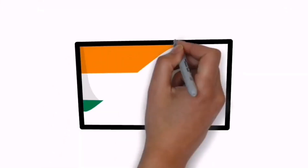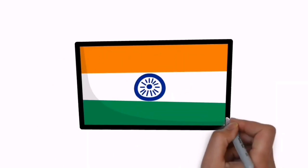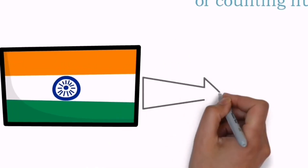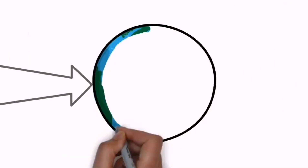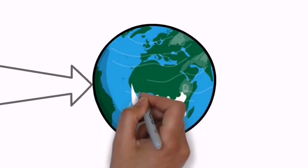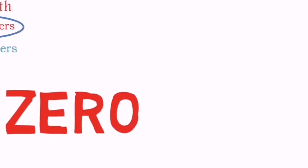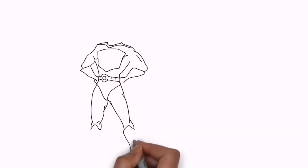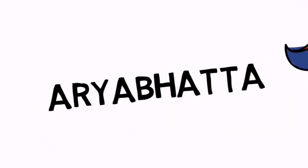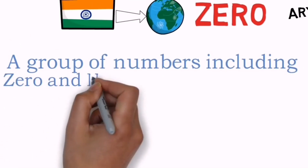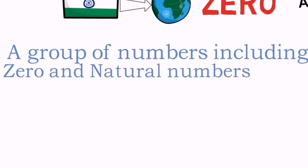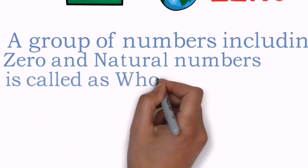These natural numbers are so often used for counting, we also call them counting numbers — 1, 2, 3, 4 are the numbers we use for counting. Now let me tell you one story about one superhero of India: ancient mathematics. He gave the greatest gift to the world, and this gift is nothing but the digit 0. Yes, digit 0 is the greatest gift given by Indians. This superhero is none other than great mathematician Aryabhatta. Aryabhatta invented 0, and by giving this 0 to the world, we developed a new concept — a group of numbers including 0 and natural numbers — called whole numbers.